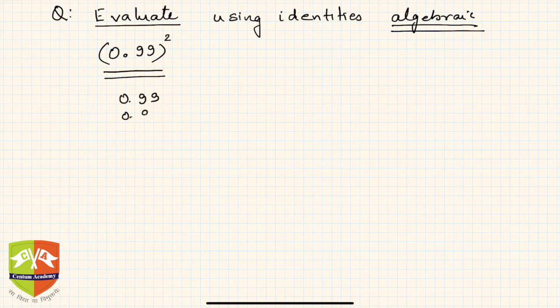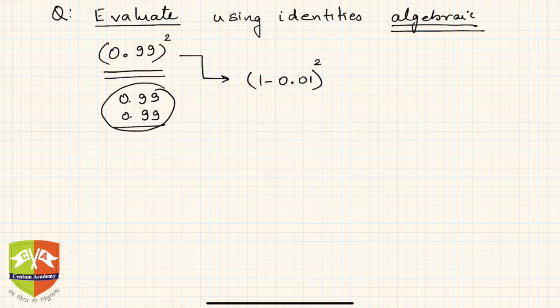Now 0.99² could have been calculated by our usual multiplication method, but that would be a cumbersome process. What is the use of learning algebra? Let us see how algebra rescues us from this ugly looking multiplication problem. If you see, 0.99 is nothing but 1-0.01.